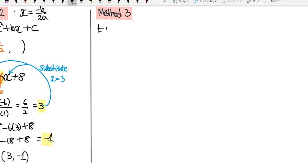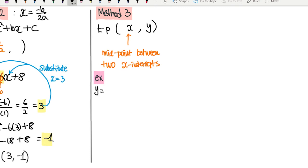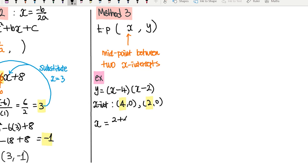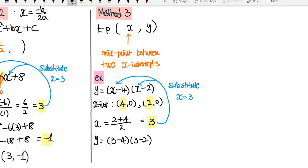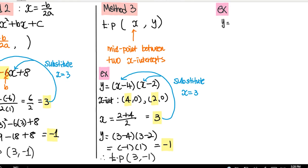Let's move on to our last method. The x value of the turning point is always the midpoint between the two x-intercepts. So if you already know the two x-intercepts, you can easily find the x value of the turning point. For example, we have y equals (x minus 4)(x minus 2). Using the null factor law, the x-intercepts are 4 and 2. To find the midpoint, add those two values and divide by 2: (2 plus 4) over 2, which is 3. This is the x value of the turning point. To find the y value, substitute x equals 3 into your equation: y equals (3 minus 4)(3 minus 2) equals negative 1 times 1, which is negative 1. Therefore, your turning point is (3, negative 1).